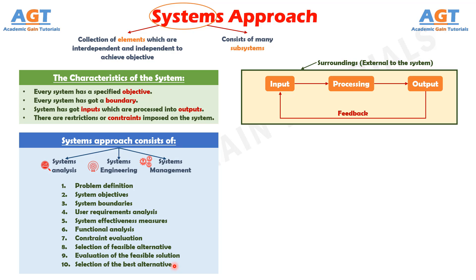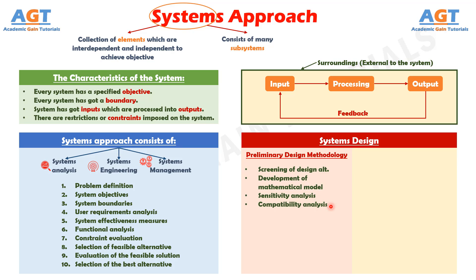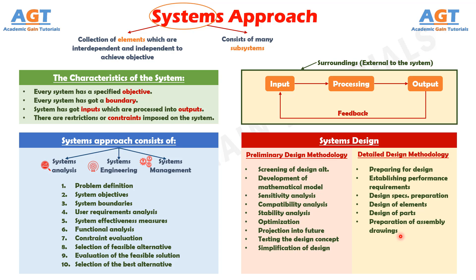Now let's discuss system design in detail. System design is divided into two phases: preliminary and detailed design. Preliminary design consists of screening of design alternatives, development of mathematical model, sensitivity analysis, compatibility analysis, stability analysis, optimization, projection into the future, testing the design concept, and simplification of design. Detailed design includes preparation for design, establishing performance requirements for hardware and software, design specifications preparation, design of elements and subsystems, design of parts, preparation of assembly drawings, experimental construction, system integration, testing, and redesign.